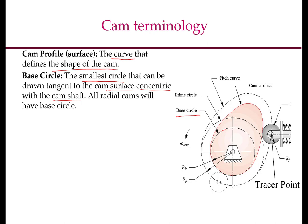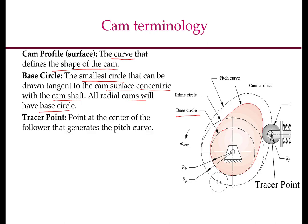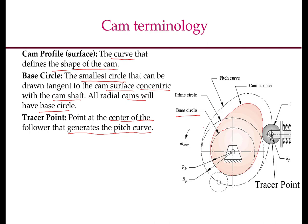A tracer point is the point at the center of the follower that generates what is known as the pitch curve. For a roller follower, the center of the roller is the tracer point, and the curve it traces out is known as the pitch curve. This path is generated assuming that the cam stays stationary and the follower moves on the cam surface. For knife-edged followers, the cam profile and the pitch curve are the same — there is no distinction between them.